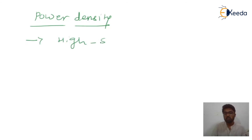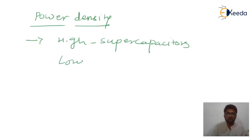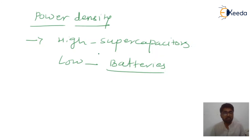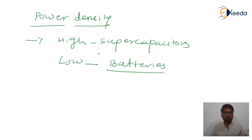Now regarding power density: power density is high in supercapacitors and low in batteries. Because of the high power density, supercapacitors can generate sudden or surge energy. Batteries have very low power density, so their power supply capability is very low. Supercapacitors are much better in power supply than batteries. So this is about power density and energy density. Thank you friends.